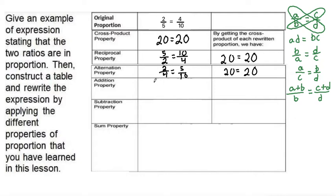Using the numbers, we get 2 plus 5 over 5 is equal to 4 plus 10 over 10, which can simplify to 7 over 5 is equal to 14 over 10. And multiplying these using the cross product property to verify that this is true.